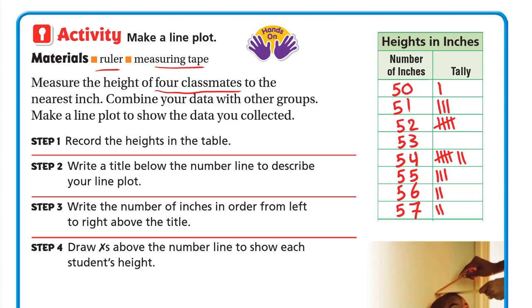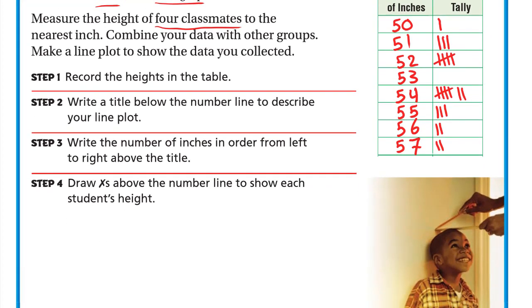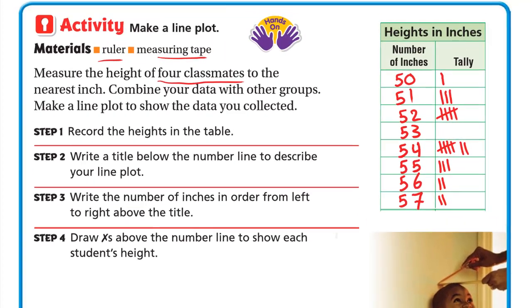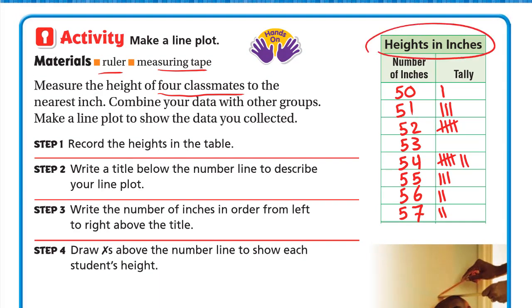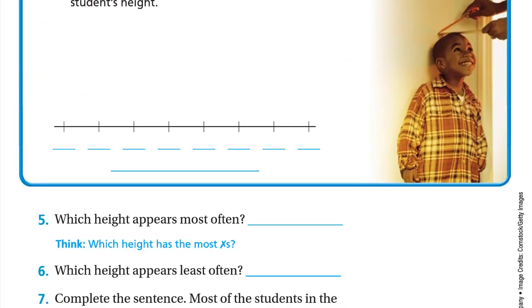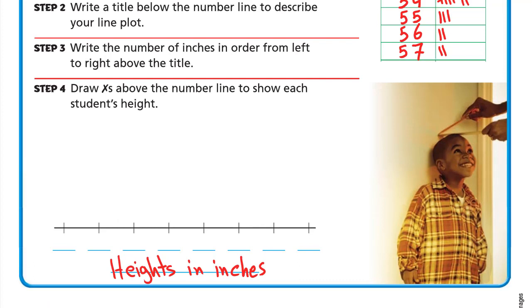Step number two: Write a title below the number line to describe your line plot. The title here is Heights in Inches. Step number three: Write the number of inches in order from left to right above the title. We have from 50 till 57.